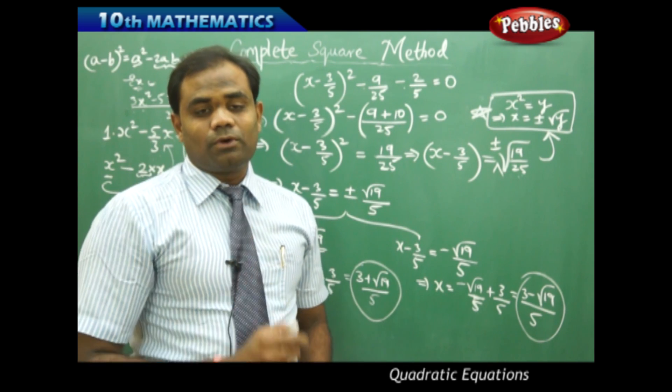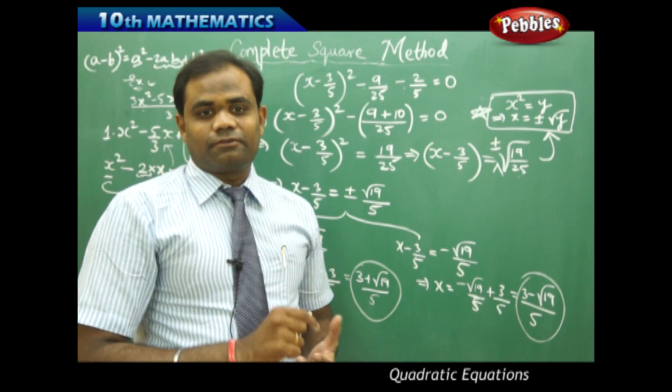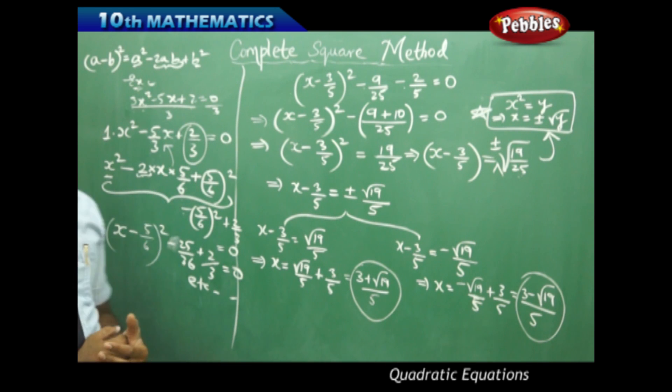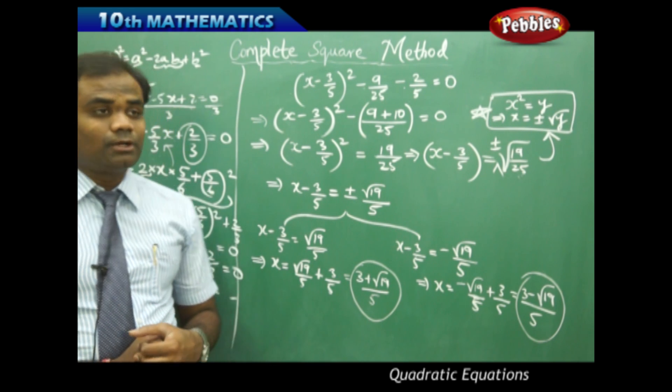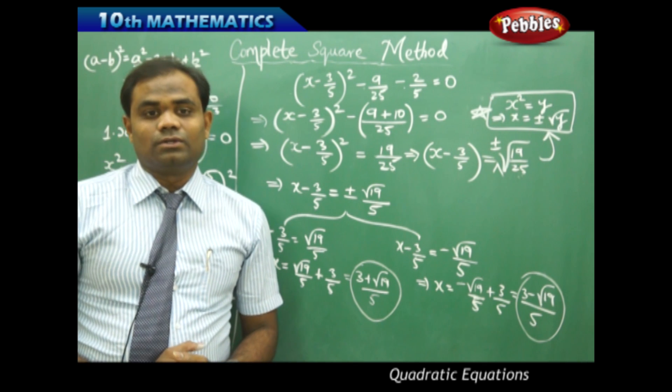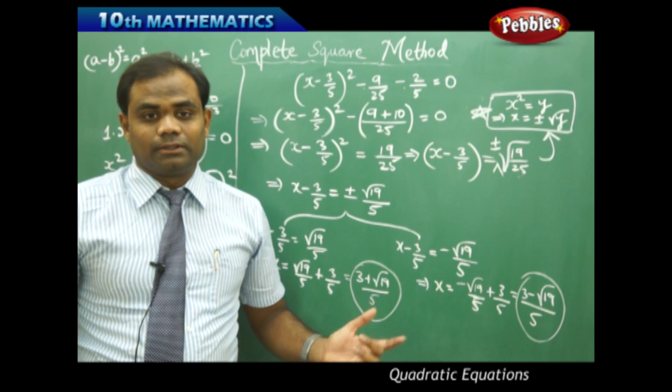But the most important part of this method is to identify the coefficient of x² and then reducing this to a complete square form either by using the formula (a - b)² or (a + b)². This is a very important note for this method, the complete square method.